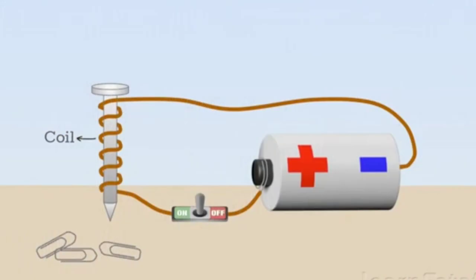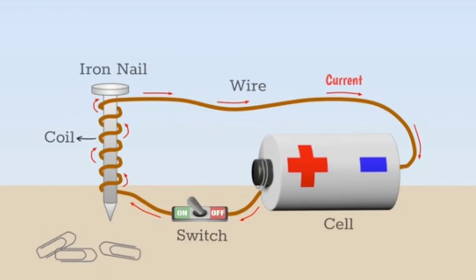Make a circuit connecting this coil. Now connect the iron nail, switch, and cell as shown in the diagram. Connect the free ends of the wire to the circuit through a switch. Put some pins near the nail.